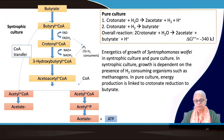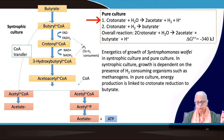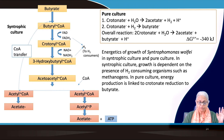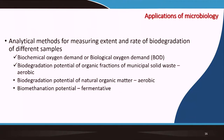Syntrophomonas wolfei has been tested in both syntrophic culture and pure culture. This species can convert crotonate to acetate or butyrate using proton motive force. In syntrophic culture, it converts butyrate to acetate, producing hydrogen that is taken up by methanogens, giving complete conversion to acetate. In pure culture, complete conversion does not occur and butyrate remains.